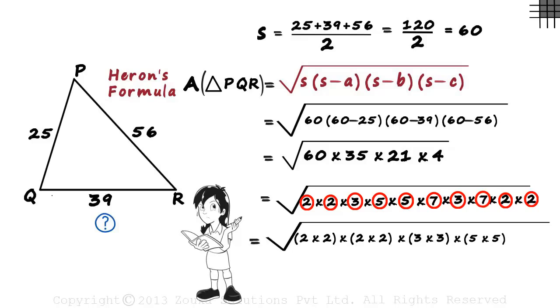To get the square root of these numbers, we pick one number from each pair, multiply them and remove the square root sign. It will equal 2 multiplied by 2 multiplied by 3 multiplied by 5 multiplied by 7. That gives us 420 square units.